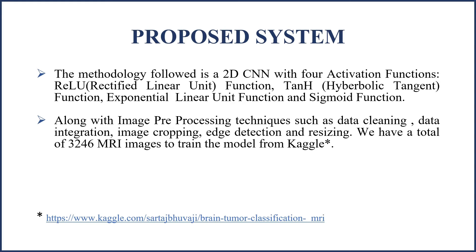The approach this work takes is using a 2D or flattened CNN model with 15 layers, including activation functions such as ReLU, ELU, TANH, and Sigmoid. The input dataset with 3,246 MRI images was collected from Kaggle. The dataset was resized, enhanced, and augmented to train the model for various possible locations of malignant cell growth.